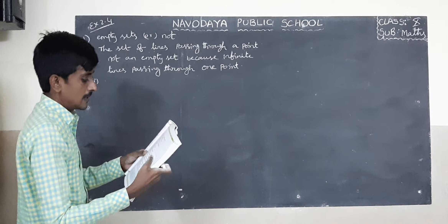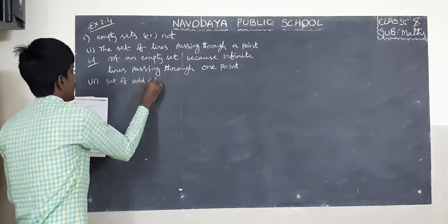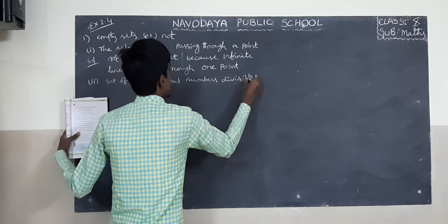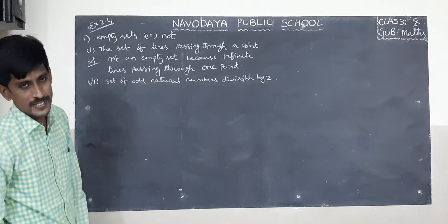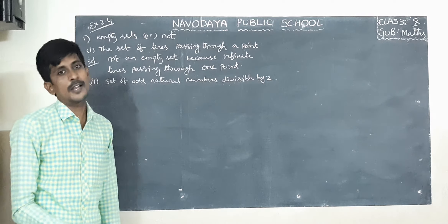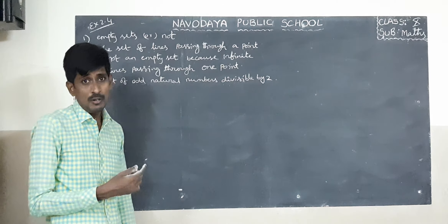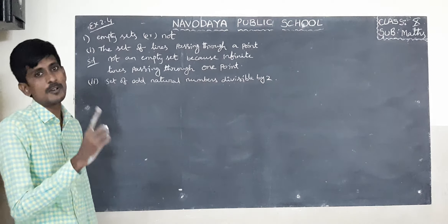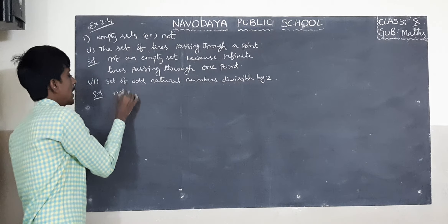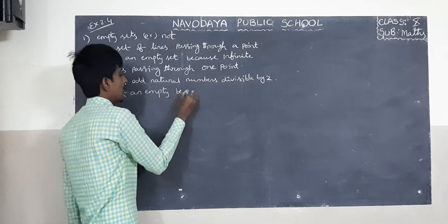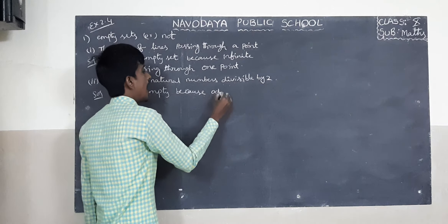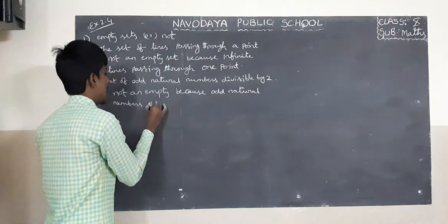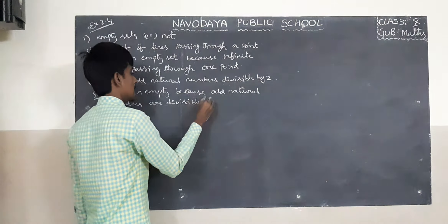Second one: the set of all natural numbers divisible by 2. If any number is divisible by 2 — any odd number is not divisible by 2. If you take any odd number and divide it by 2, it leaves remainder 1, which means it is not divisible. Even numbers are divisible by 2. So it is not an empty set.